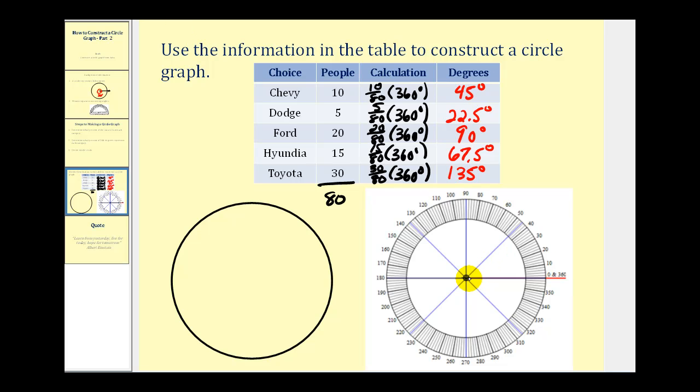So what I'm going to do is just mark off 45 degrees. So I'll start here. 45 degrees would be right here. So the first category would be in this sector. So I'll put a C for Chevy.